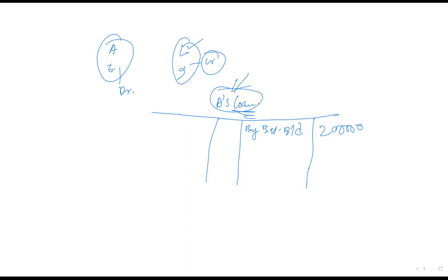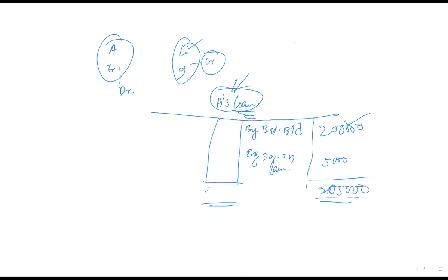By interest on loan, the loan account increases. So we credit A's Loan Account with the interest of five thousand, making the total two lakh five thousand. I hope that is clear — please ask if you have any doubts.